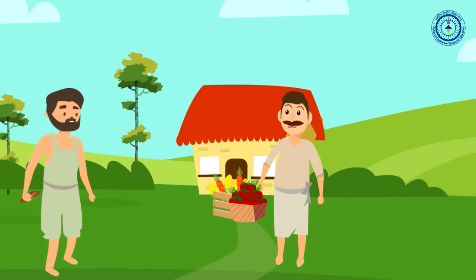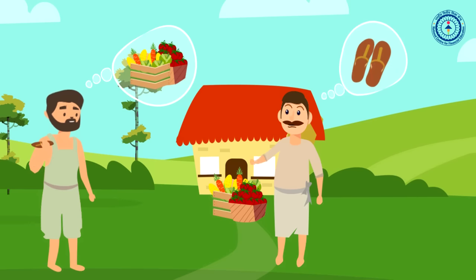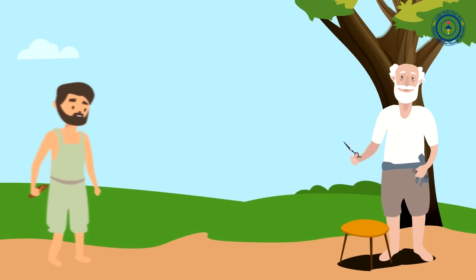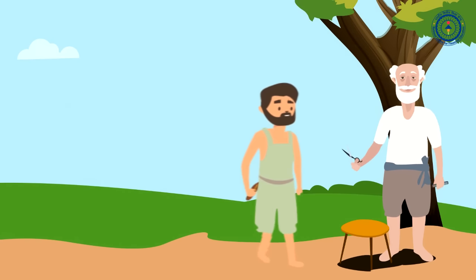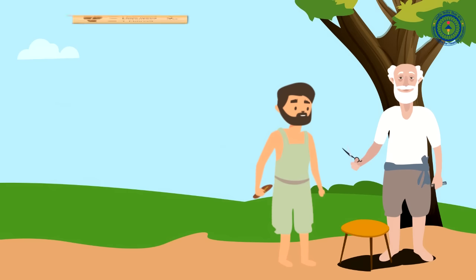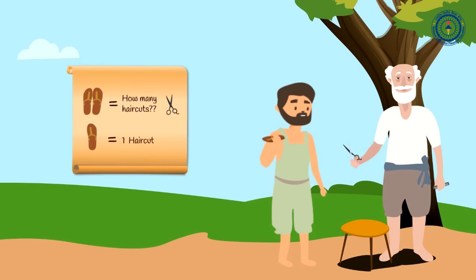Now, Manoj needs a haircut and goes to Kisna, but Kisna doesn't need more footwear. Hence, no barter takes place. In another situation, Manoj needs a haircut and goes to Shambu the barber, but the value of the haircut is much lesser than the value of a pair of slippers, and the slipper cannot be divided. Hence, no barter takes place.